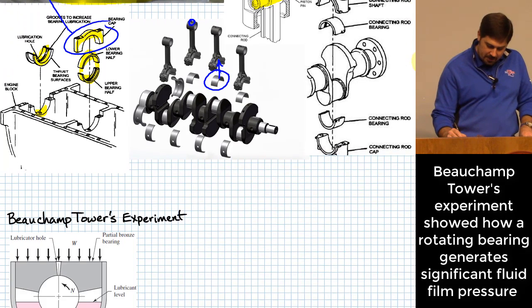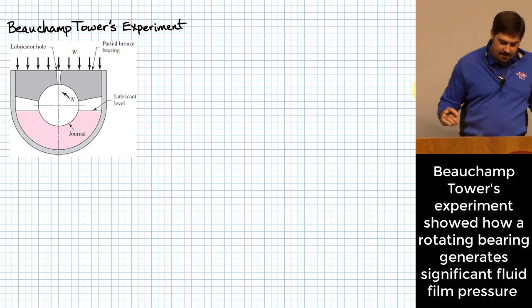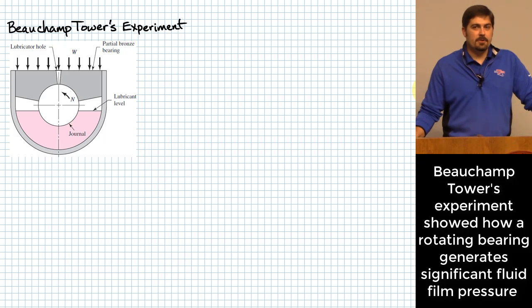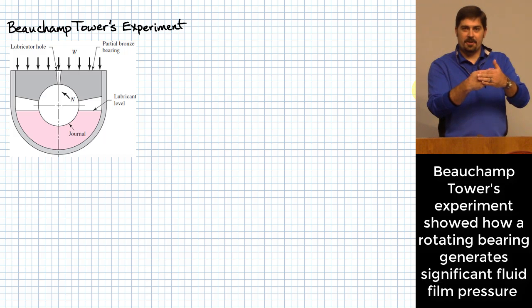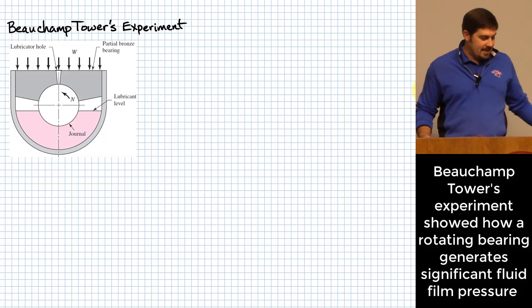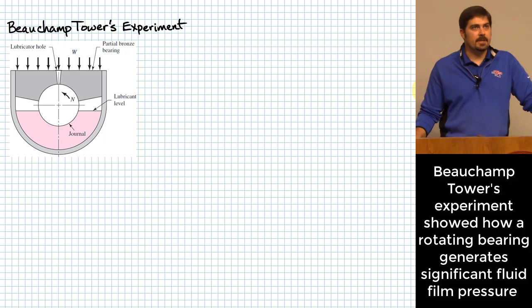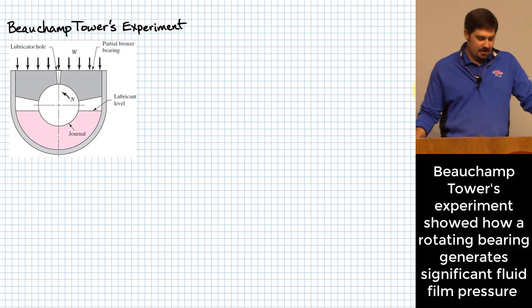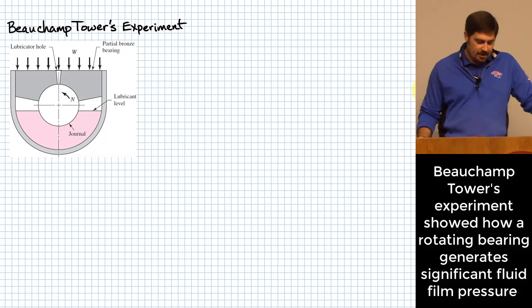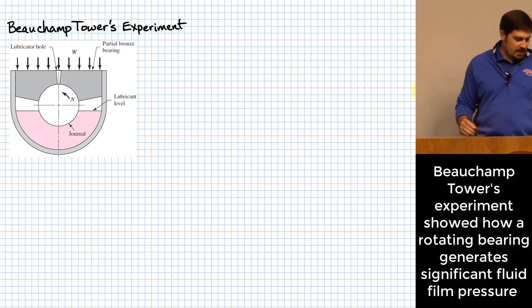Bearings like this have been used for a long time — longer than people even understood why they worked. People have known that introducing oil between two circular mating surfaces reduces friction and makes them last longer. Back in the late 1800s, a British man named Beauchamp Tower, working for the railroad, was trying to do experiments with these bearings to determine things like the coefficient of friction.